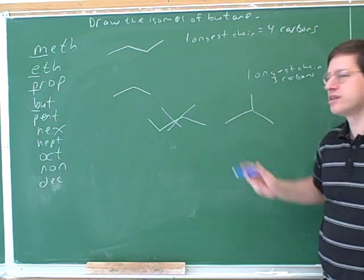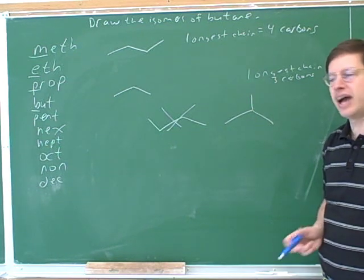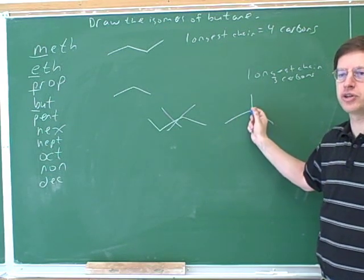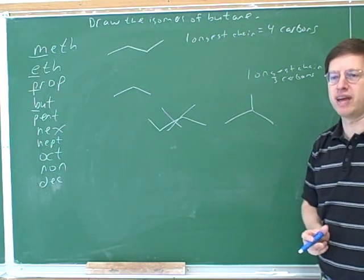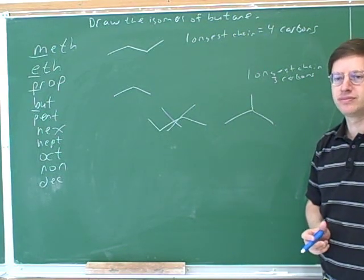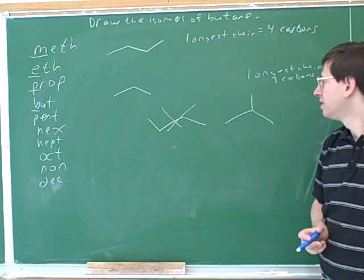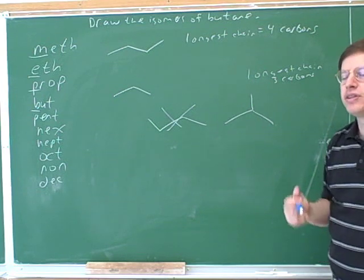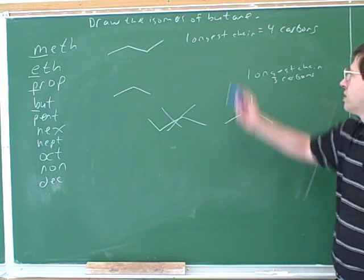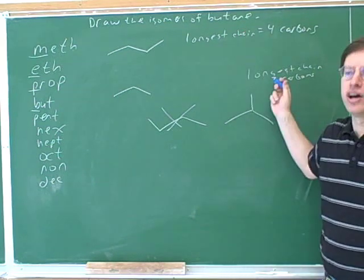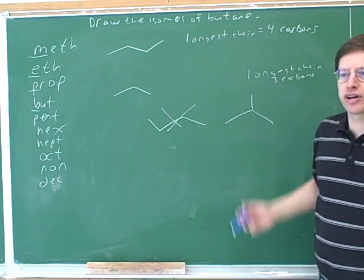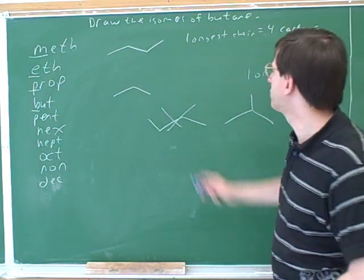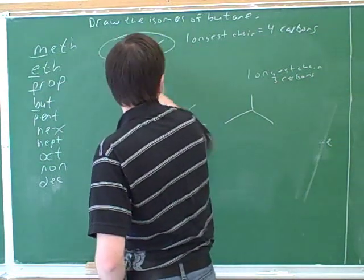How many carbons are there total in this molecule now? There's one carbon at the end of each line, and this corner or intersection is also a carbon. So this really is an isomer of butane because they have the same numbers of carbons. The systematic trick is: start by drawing the longest possible chain, then draw the next longest chain and ask where you can put in the extra carbon. So here's one isomer, and here's another isomer.